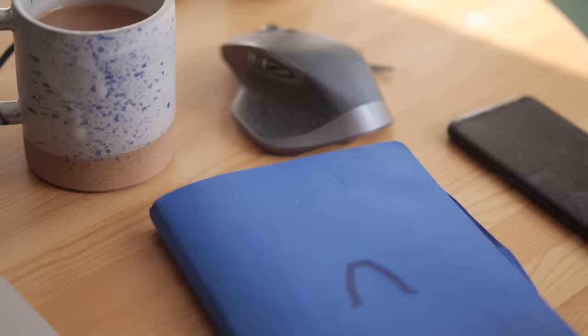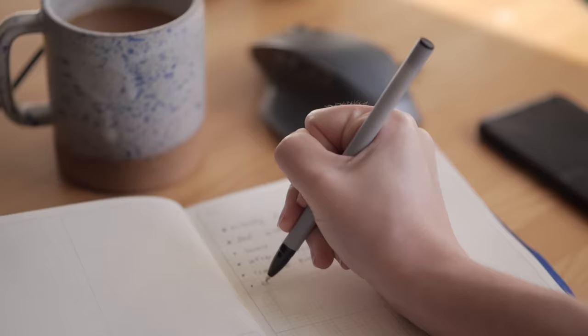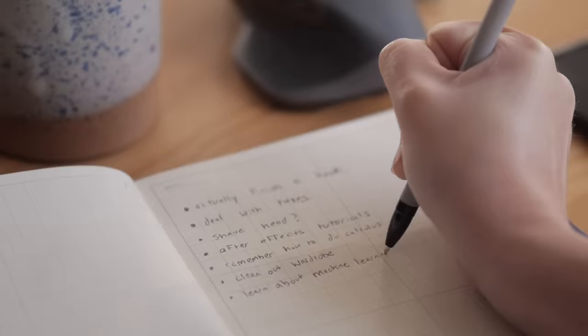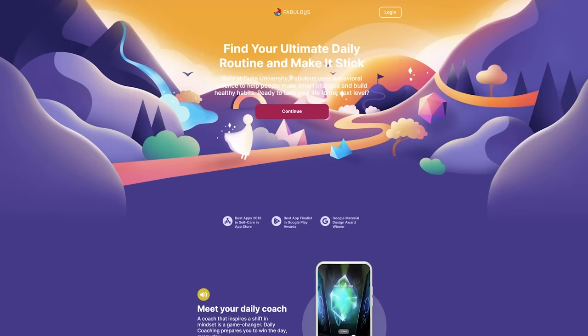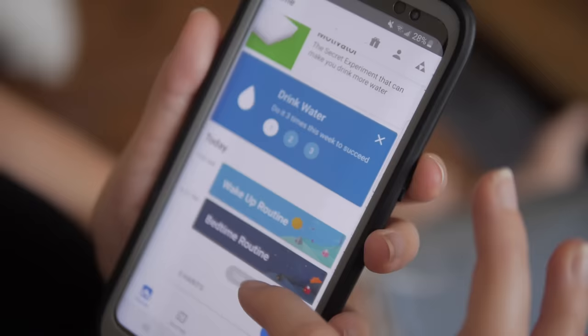But lately, even lists aren't enough to keep me on track to actually build good habits. I needed something more fun, more engaging, and more motivating. So recently, I've started using Fabulous. Fabulous is an app that helps you build routines over time by breaking habits down into small, attainable steps. The app directs you to different journeys, which are programs that help you reach a specific objective.